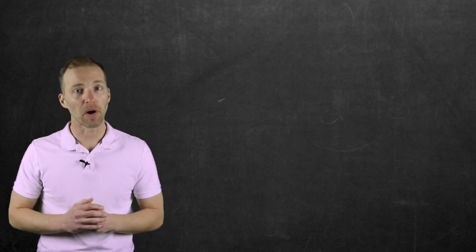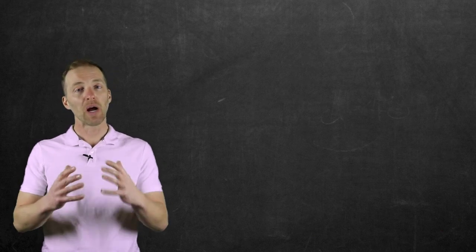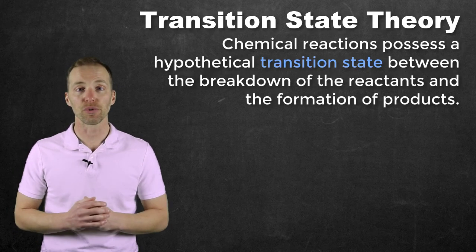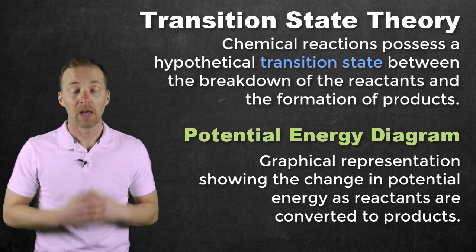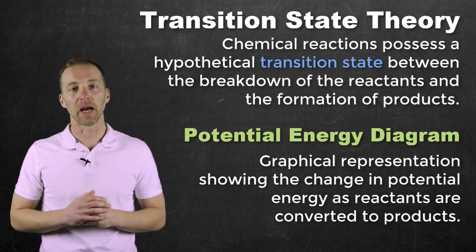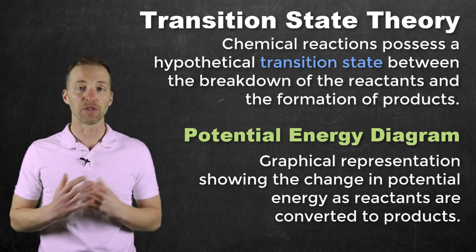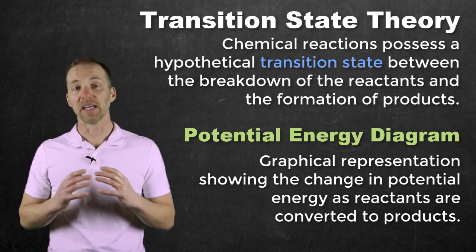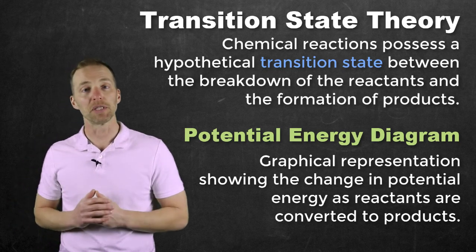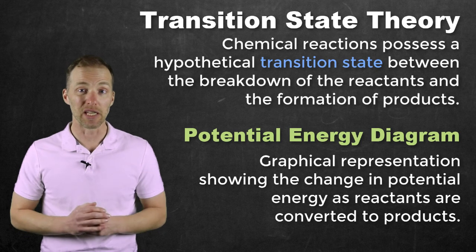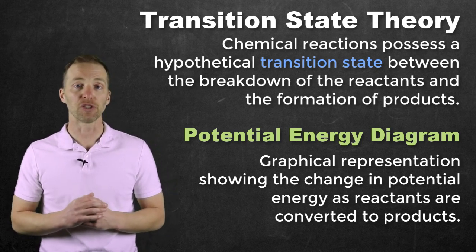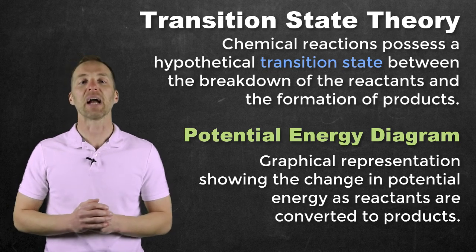Just how much energy do these particles need when they collide? We have to bring in another theory here, called transition state theory, and it's best visualized through something called a potential energy diagram. Your potential energy diagram is going to look fairly similar to an enthalpy diagram, because it does deal with the overall enthalpy change between reactants and products. The thing we're really looking at, especially when we talk about how much energy is required for a reaction to occur, is something called the activation energy.